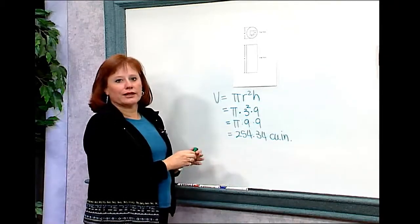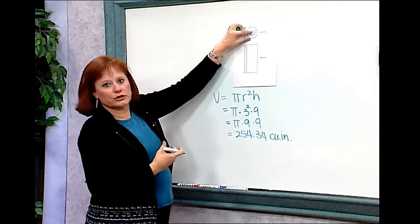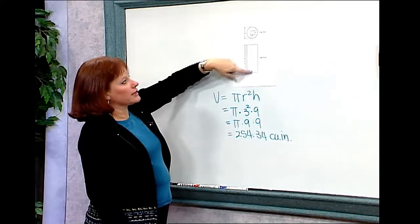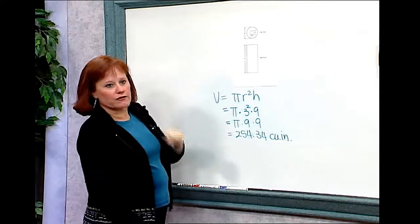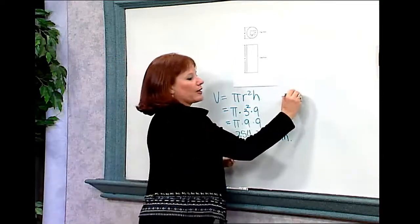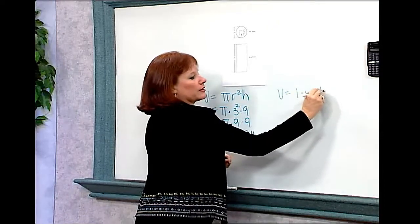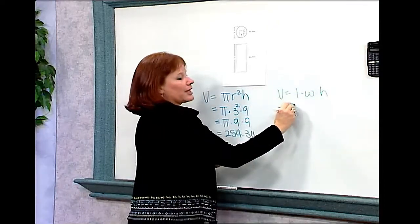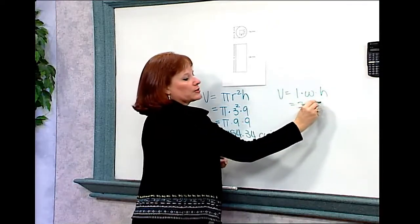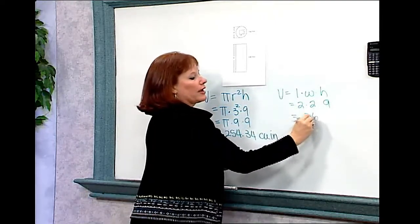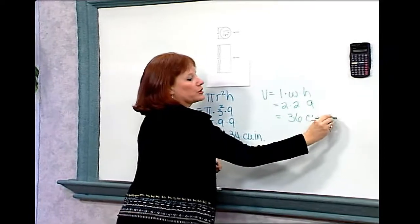The next thing I want to do is find out what the volume of the hole is in the center of the circle. This is a prism. It has a square base, and it has a height equal to the height of this entire figure. So if I'm finding the volume of that prism, I know that I'm going to take length times width times height. In this case, the volume would be 2 times 2 times 9. If I multiply those together, I get 36 cubic inches.